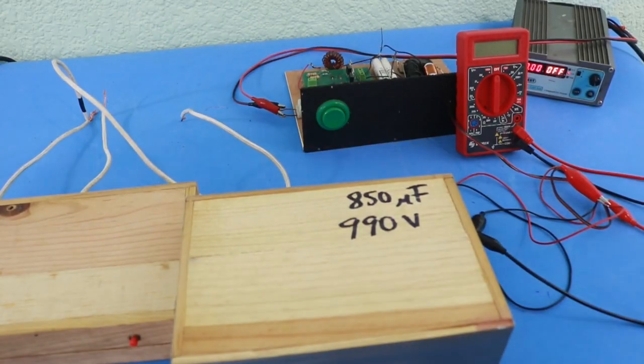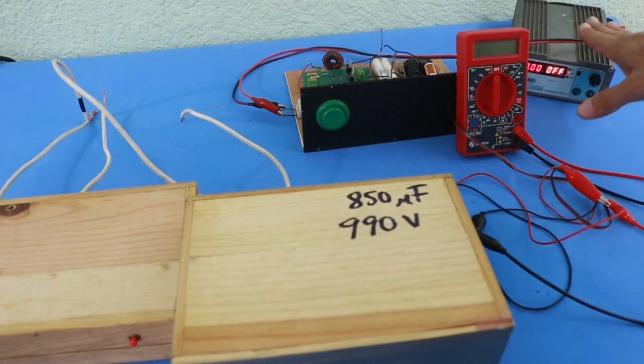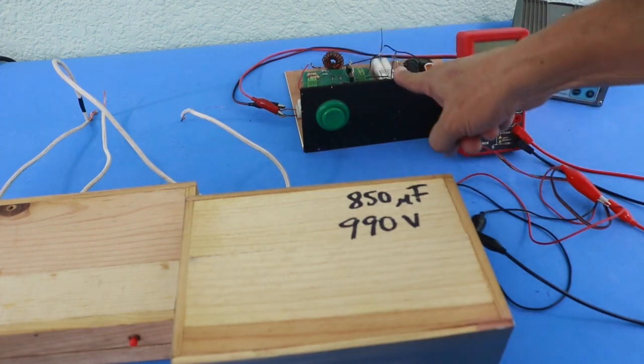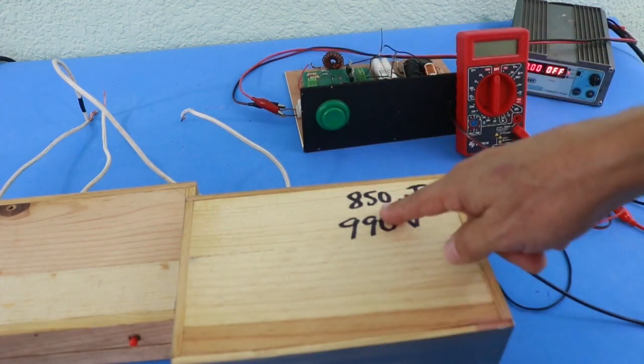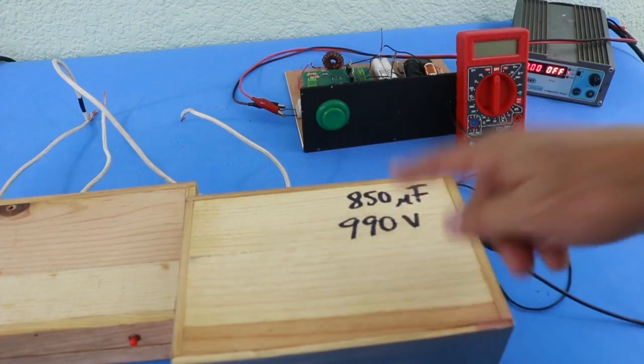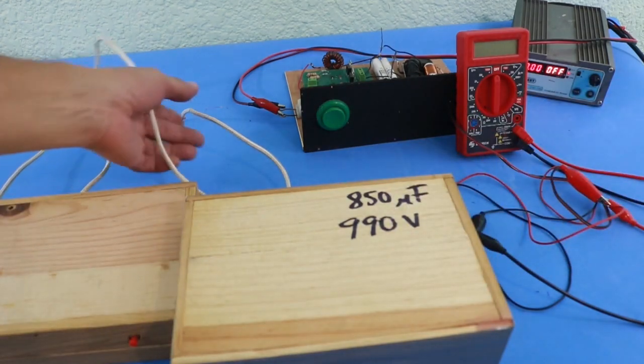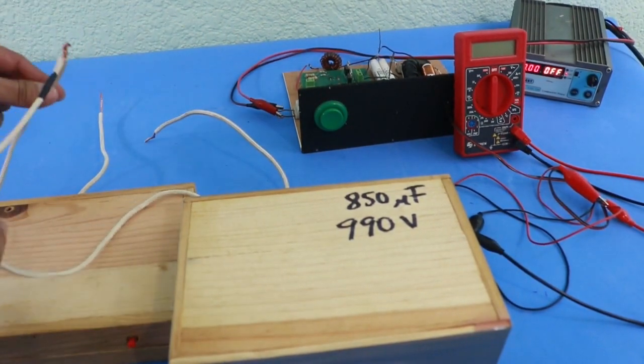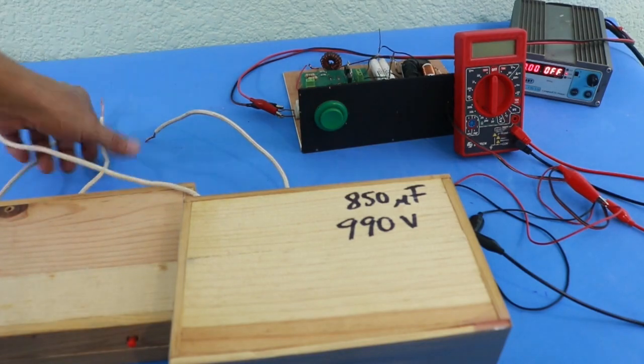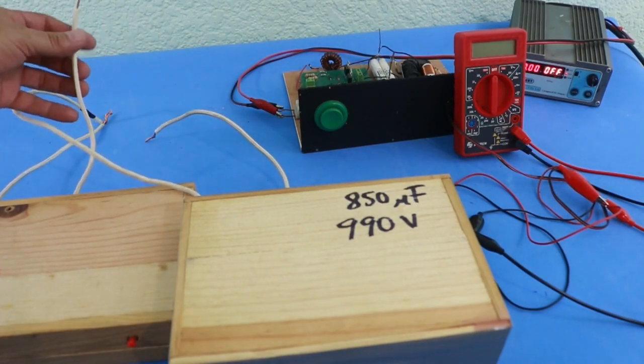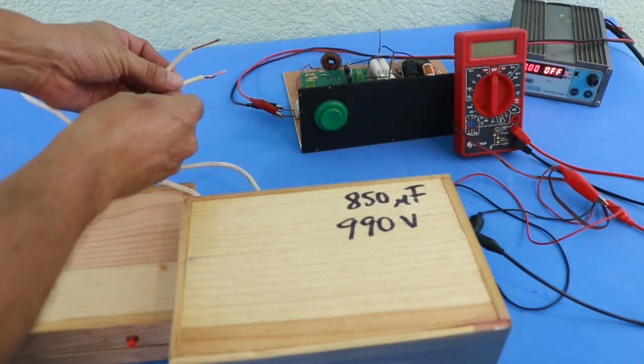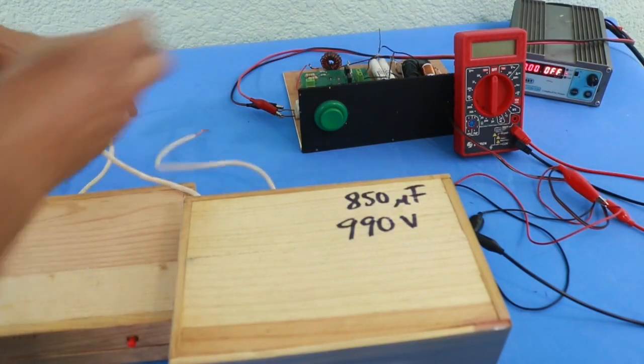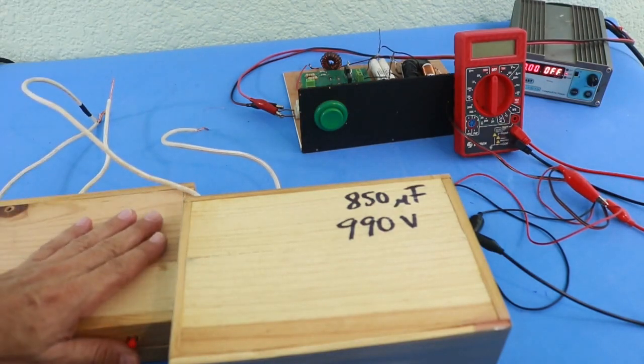Okay, so the connections go like this. The low voltage power supply feeds the capacitor charger and the high voltage output from the capacitor charger goes to the capacitor bank. Then the output of the capacitor bank are these two wires. One of them goes to one terminal of the spark gap switch and this is the other terminal of the switch. Therefore, the discharge from the capacitor bank occurs at these two wires when we press the button of the spark gap.